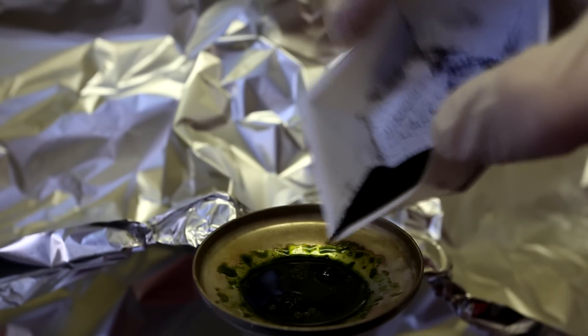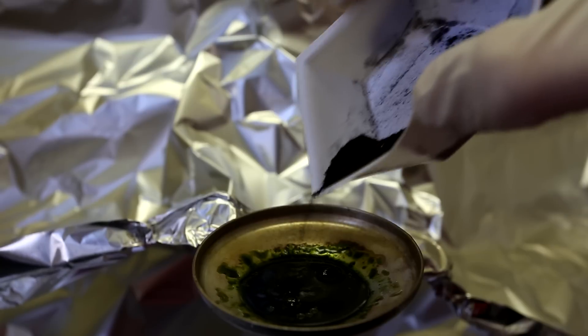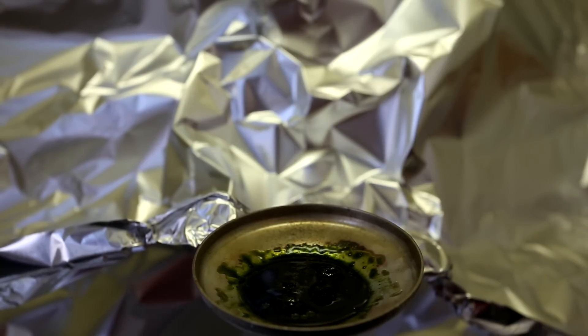The more potassium permanganate that you add, the more manganese heptoxide will be synthesized. However, if you add too much, it will solidify into a solid clump.